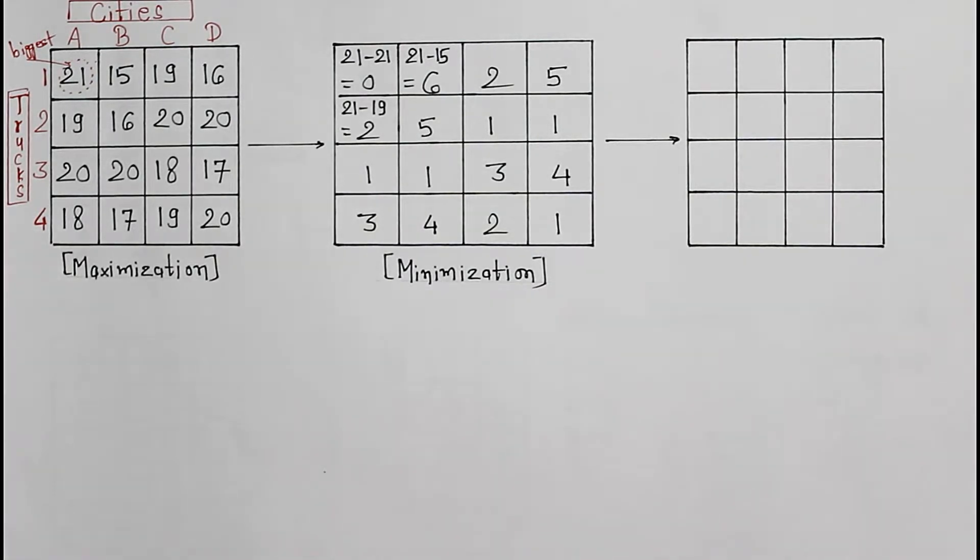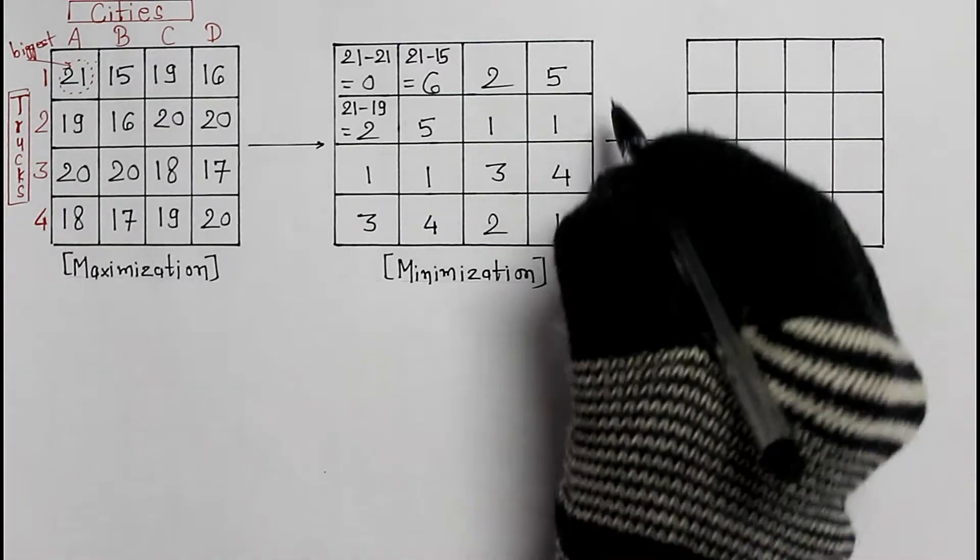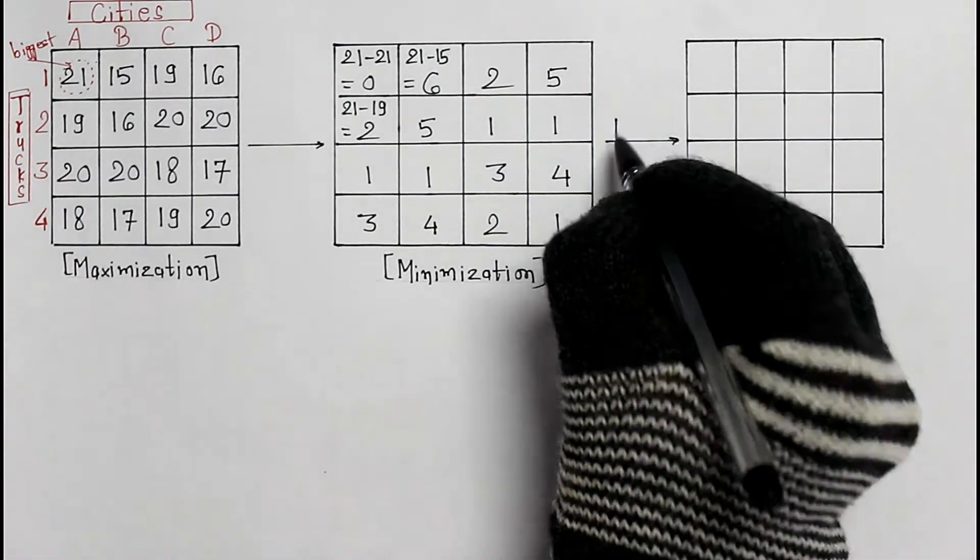This is how we convert our maximization matrix into a minimization matrix. And this was the only extra work. Rest of the procedure is the same as we always do. We are applying Hungarian method now.